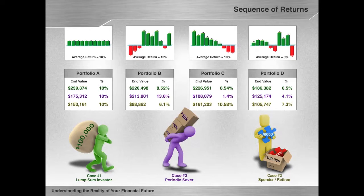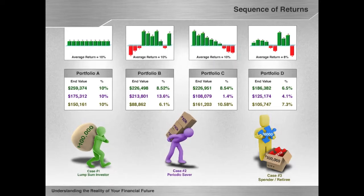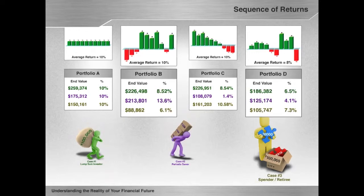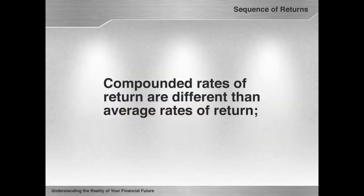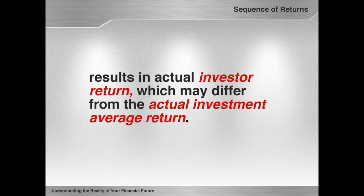What do you notice about these sequences? Portfolio A has no variability in annual sequence. Portfolio B has negative returns early in the sequence, and Portfolio C has negative returns late in the sequence. In Portfolio D, focusing on Case 3 and comparing Portfolios B and D, it is possible to have an investment average 8% return and finish with a higher value than a 10% average return, due to sequence of return and cash flow differences. This demonstrates that compounded rates of return are different than average rates of return, and that cash flow behavior, when combined with the actual sequence of returns, results in actual investor return, which may differ from the actual investment average return.